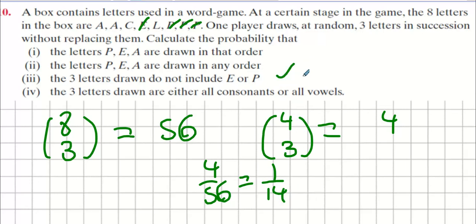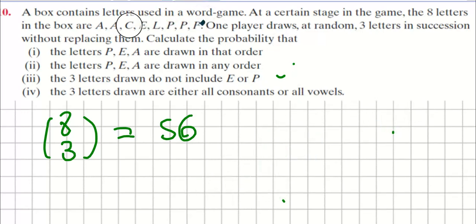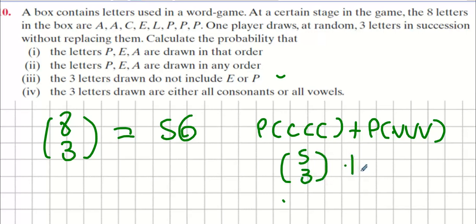Next one. Three letters drawn are either all consonants or all vowels. When I'm writing C here, I mean consonant, consonant, consonant. And when I write V, I mean vowel, vowel, vowel. How many different consonants can there be? Five. Five choose three. How many different vowels? Three choose three. How many in total then? Eleven. That's eleven out of 56.